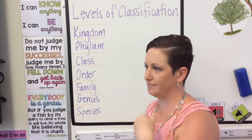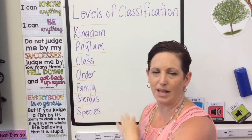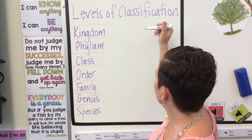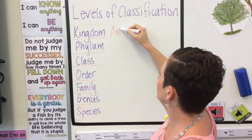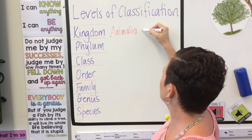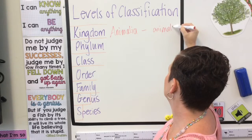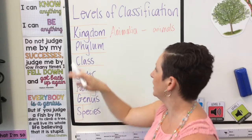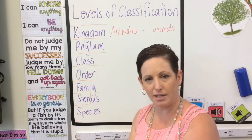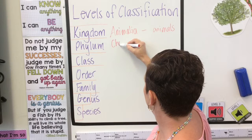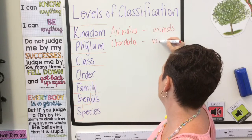Let me do another demonstration using lions. Let's talk about how we classify a lion. The lion belongs in the kingdom of Animalia — all the animals in the world. The next level of classification is the phylum, and the scientific word for a lion's phylum is Chordata, which basically means that it is a vertebrate.